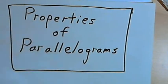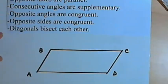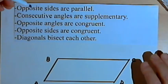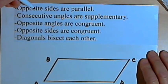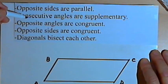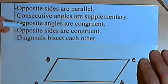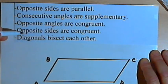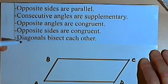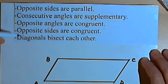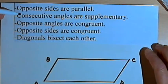Here are the five properties: the opposite sides of a parallelogram are parallel; the consecutive angles are supplementary; the opposite angles are congruent; the opposite sides are congruent; and the diagonals bisect each other. Let's look at each property separately.